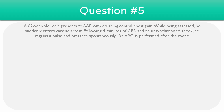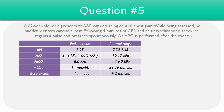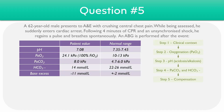And finally, we have question five. A 62-year-old male presents to A&E with crushing central chest pain. Whilst being assessed, he suddenly enters cardiac arrest. Following four minutes of CPR and an unsynchronized shock, he regains a pulse and breathes spontaneously, and an ABG is performed after return of spontaneous circulation. Examining the clinical context, the patient likely had a myocardial infarction which led to cardiac arrest and has now regained circulation.